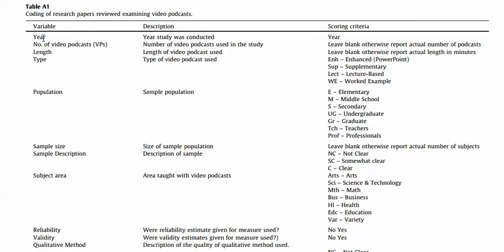In the appendix, you'll find year of study, number of video podcasts, length, and type. There's a description and the scoring criteria. The score has been given, though it's not particularly well aligned in this table.